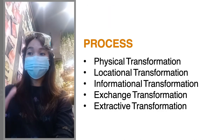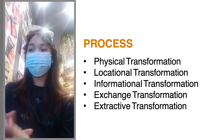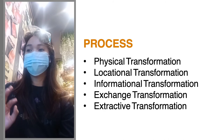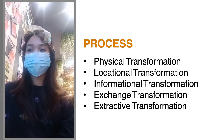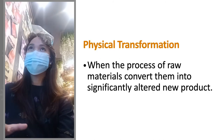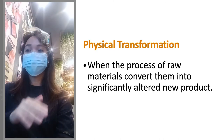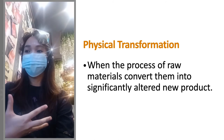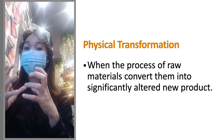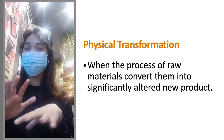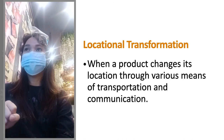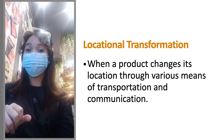For the process stage of the IPO framework, there are several types of transformation. Physical transformation is when raw materials are converted and altered into a new form — the product physically looks different. Locational transformation is when the product moves from one place to another, such as during freight or shipping, and its location changes each time it moves through the process.